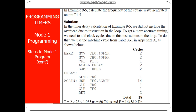The first instruction, MOV TL0, #0F2H, takes two machine cycles. MOV TH0, #FFH takes two machine cycles. The complement instruction takes one machine cycle. Then, calling the delay takes two machine cycles. The unconditional branch instruction takes two machine cycles.